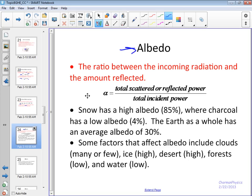What we're looking at here is the ratio between the total amount that's coming in and the amount that's reflected. Snow has a very high albedo, whereas charcoal has a very low albedo. The Earth has an albedo of 30%.